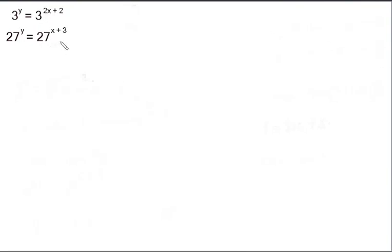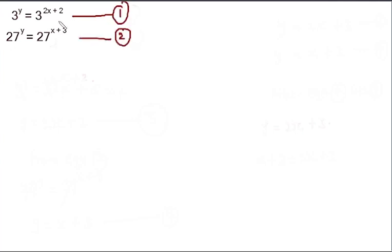In this video we're going to talk about simultaneous equations with indices. We already have an example on the screen. I'll call this equation one and name this equation two. To solve this kind of problem I need to simplify these two equations — I need to convert them to linear equations, because right now they are exponential equations.